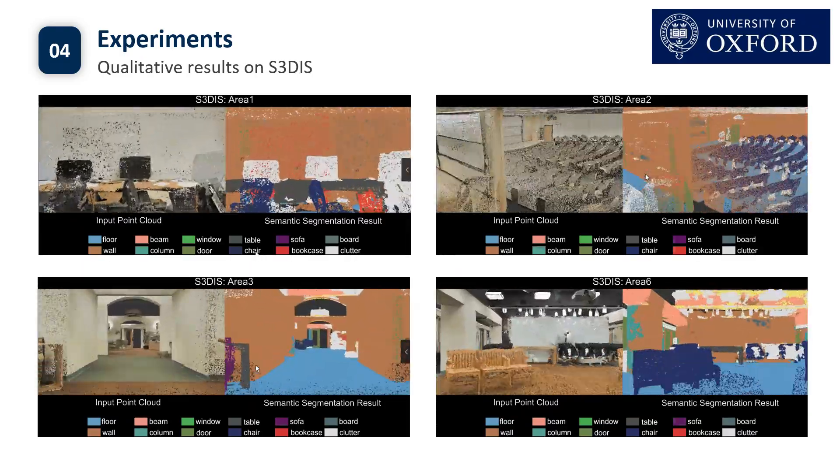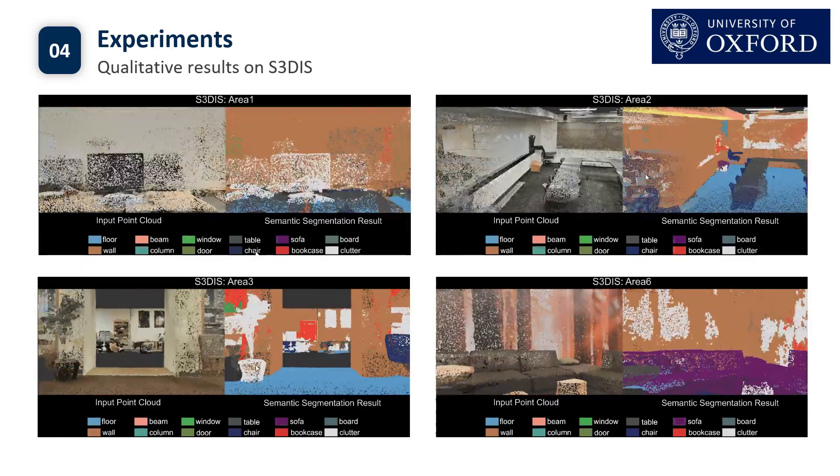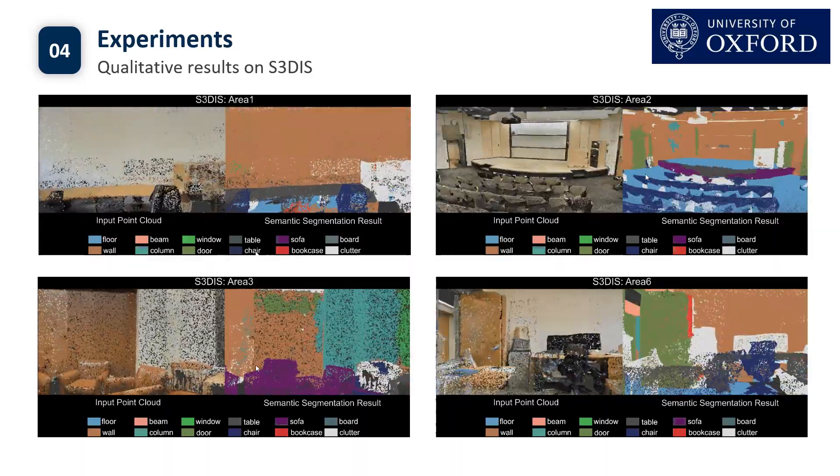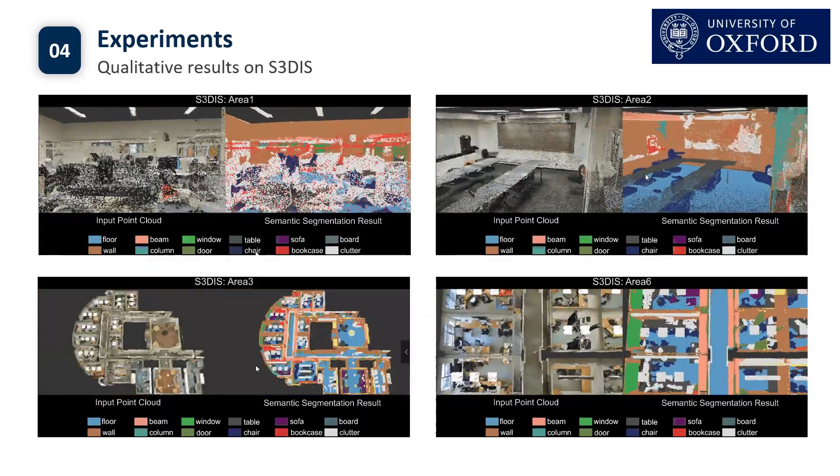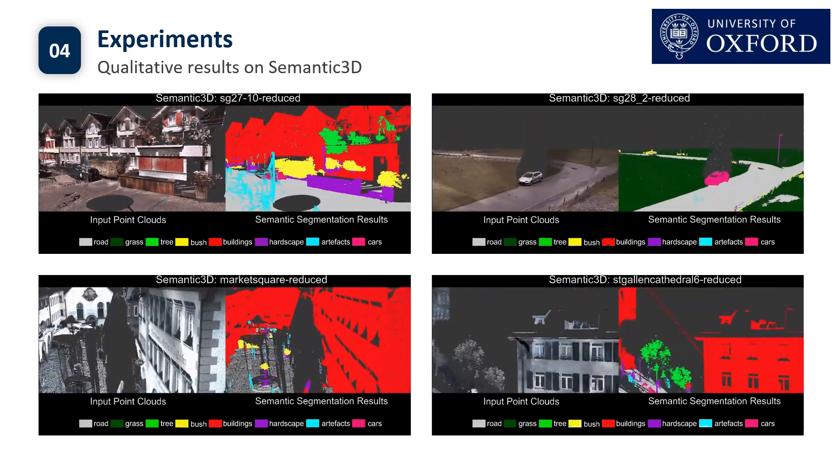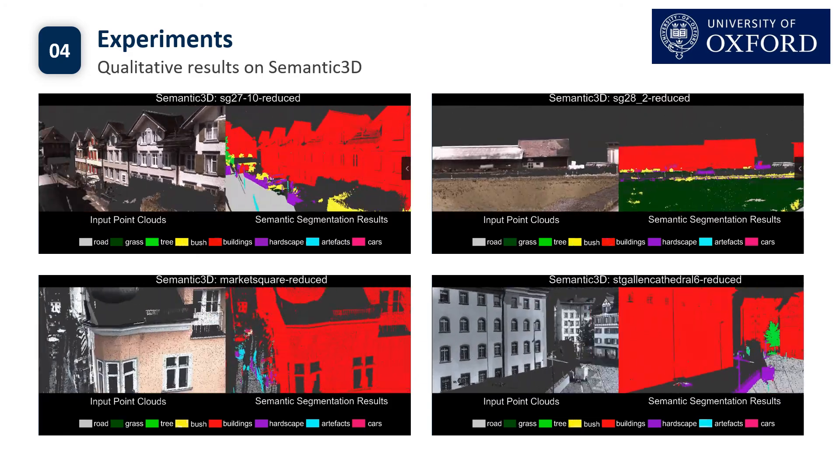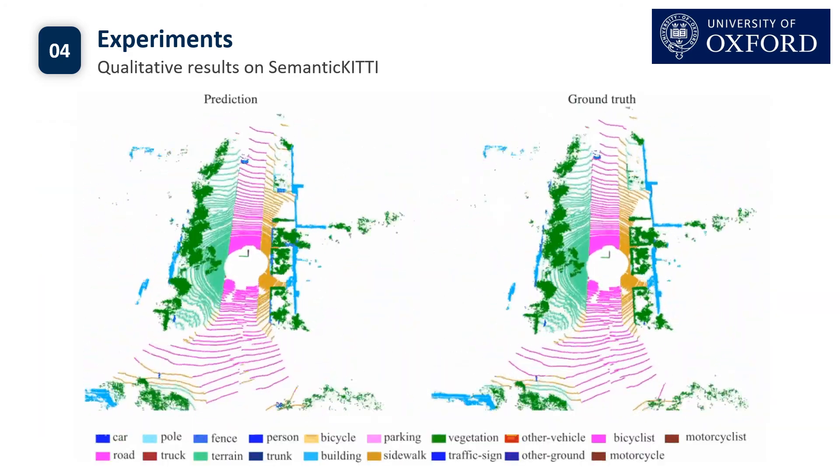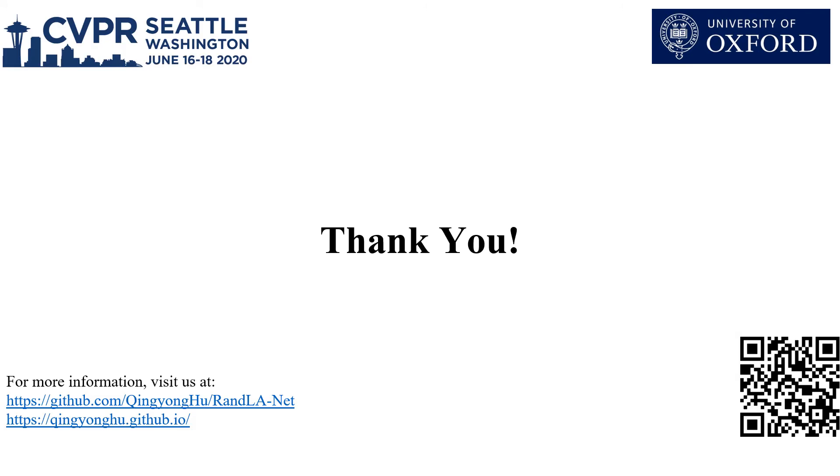Here we show some qualitative results achieved by our RandLA-Net on S3DIS dataset. Different colors mean different semantic categories. Then we show the qualitative results on Semantic3D dataset. And finally is the result on Semantic KITTI dataset. Please follow us on the GitHub page if you are interested. Thank you.